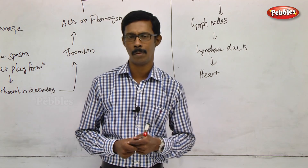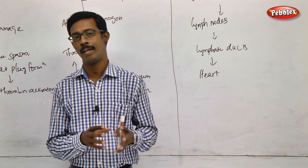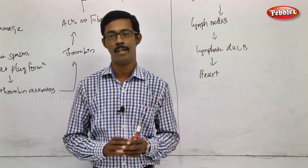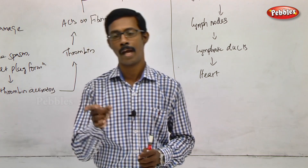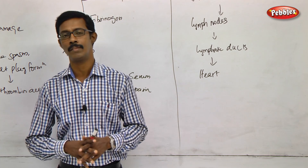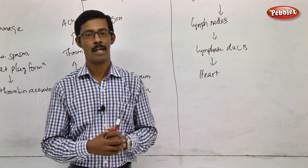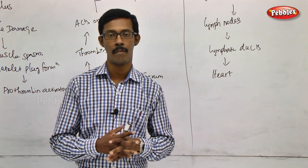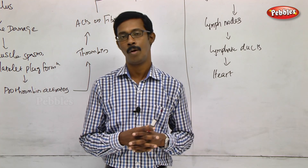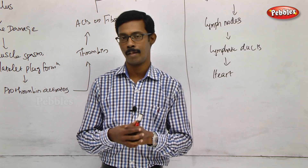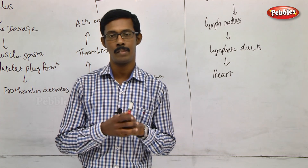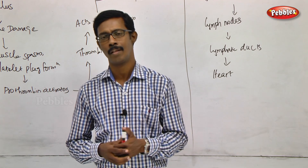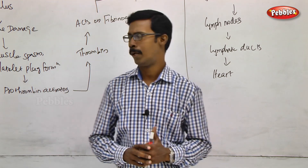When there is a clot blocking capillaries and arteries, there is also a chance for heart attack. So the clotting factors in normal circulating blood are kept in inactive form — all 13 proteins. They become active only when there is a need for clotting, coagulation, or arresting blood flow.